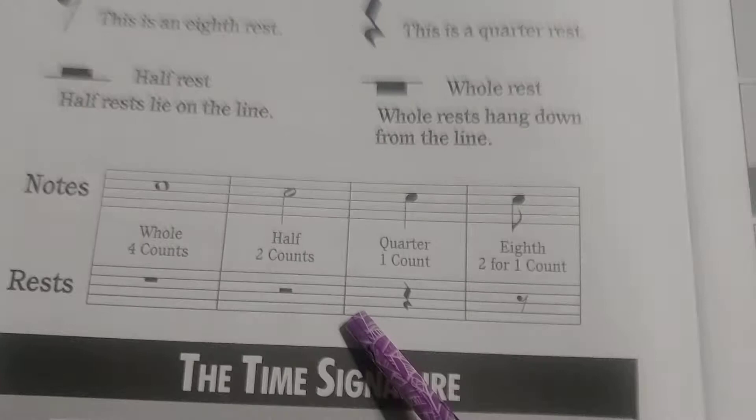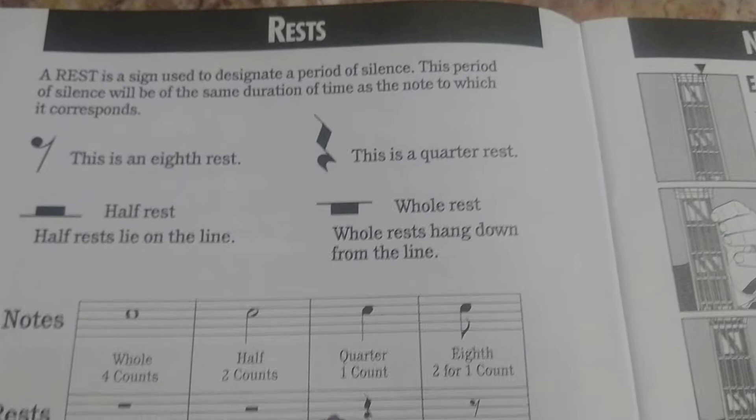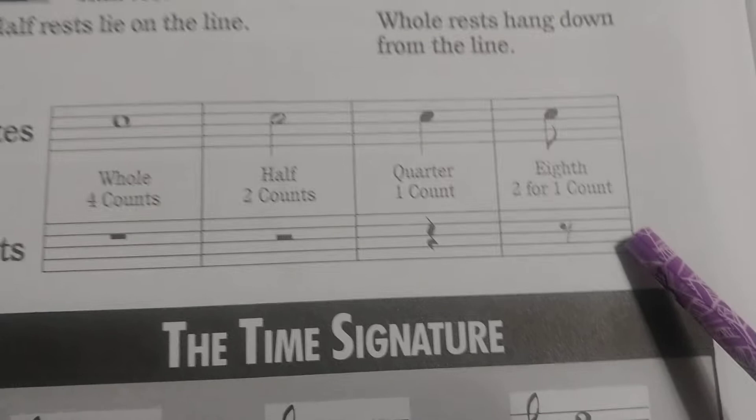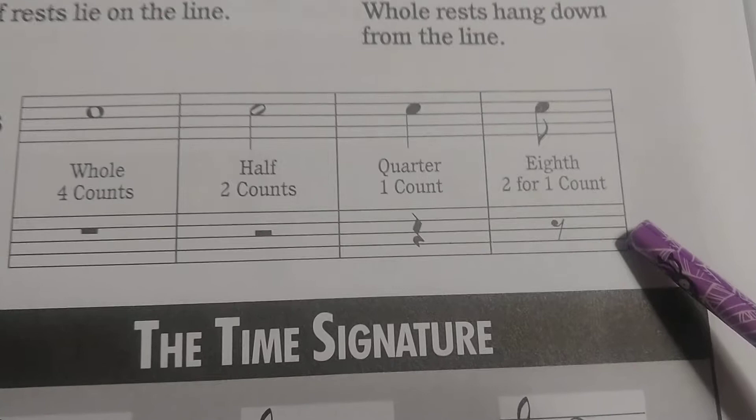That's basically pages four and five. Page six, which is the last page we'll go over in this lesson, is going to be about types of rests. Rests are super easy to remember because they'll be worth the same value as the notes that share the same name. When we have a rest, it's basically a period of silence — we'll still be counting our beats, but we won't be making any sound during that time. That's why it's called a rest.